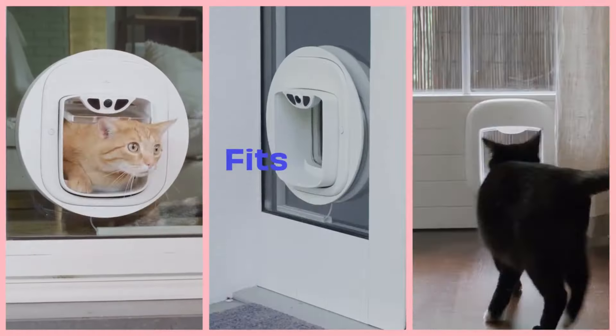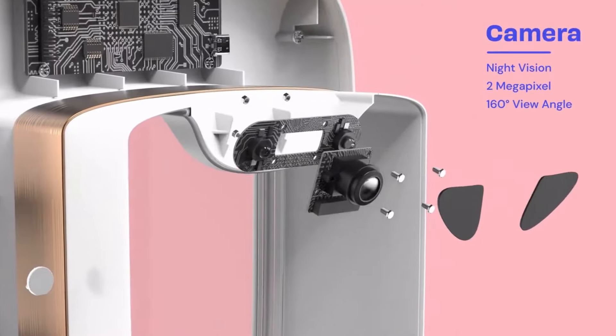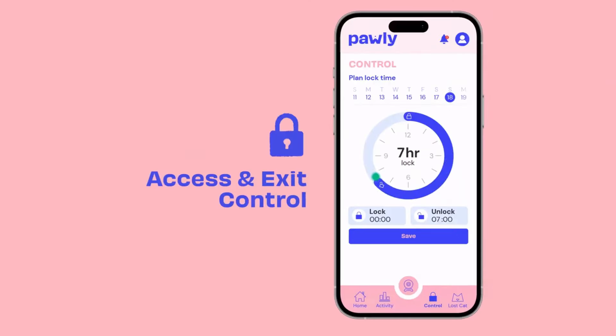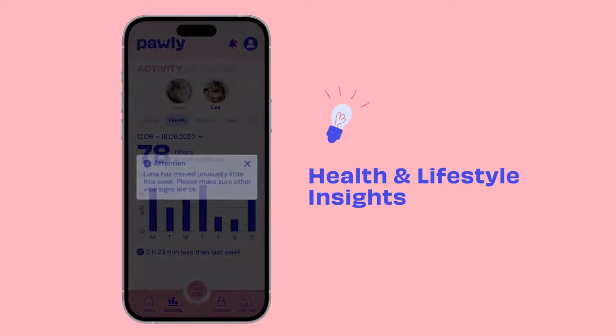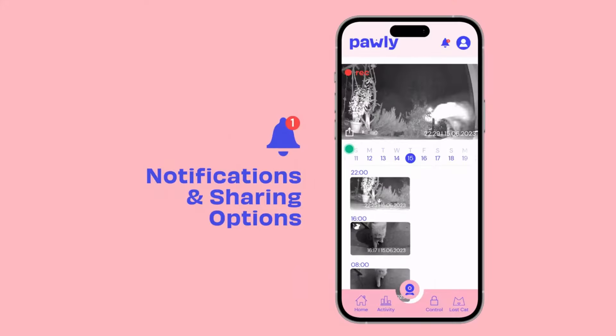With the Poly Door, you can rest assured that only your cat can access the door. The integrated microchip or RFID technology ensures that stray animals or other pets cannot pass through the door.